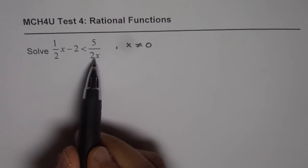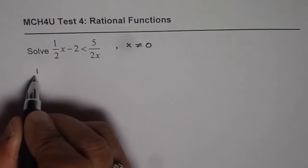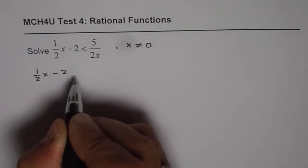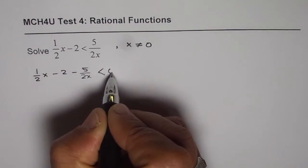Second step is that we should bring all the terms to one side. So, bringing 5 over 2x to left, we get 1/2 x minus 2 minus 5 over 2x is less than 0.